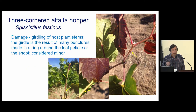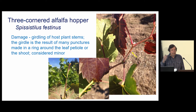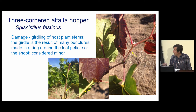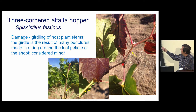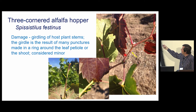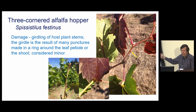The type of damage they cause to grapevines is what we call girdling, where they feed on either the petioles or the green shoots and we see a little ring around those shoots. On the photo here you can see a girdle on a green shoot. These are petiole girdles, and when they get a little bit older, this is what they look like on the leaf petioles.